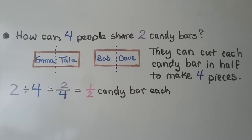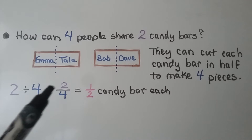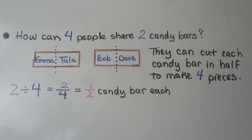How can 4 people share 2 candy bars? They can cut each candy bar in half to make 4 pieces. 2 divided into 4 parts is equal to 2 fourths — it's equal to a half candy bar each. Our dividend is the numerator and our divisor is the denominator. We can simplify it to 1 half.